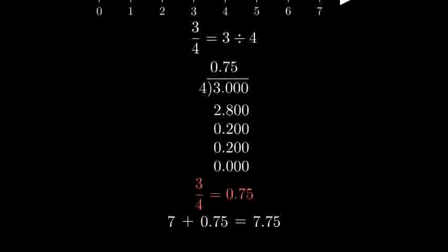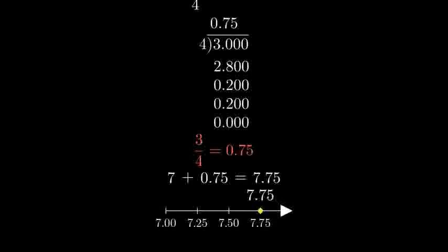7 plus 0.75 equals 7.75. Let's visualize our answer on a number line. 7.75 lies exactly 3 quarters of the way between 7 and 8.